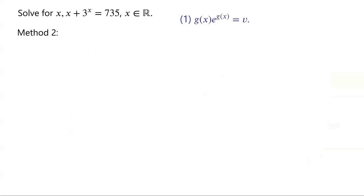Where v is a constant or expression independent of x. The second step is to apply the Lambert W function to both sides of the equation.